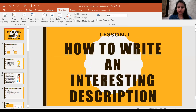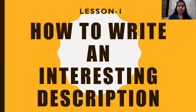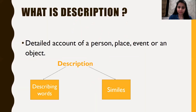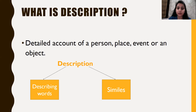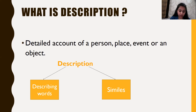You all can see the name on your screens — 'How to Write an Interesting Description.' It is very similar to the chapter we did in class 3rd called 'What in a Description?' So let us start with: what is description? Basically, whatever we are describing is called description. Description is a detailed account of a person, place, event or an object. In this lesson, we will only learn about how to describe a person. But why do we need to describe a person? The description allows us to see and to know the person better.